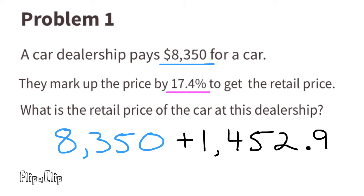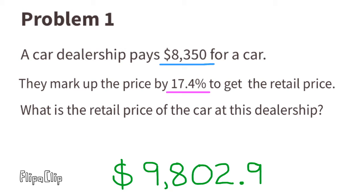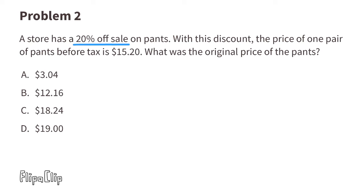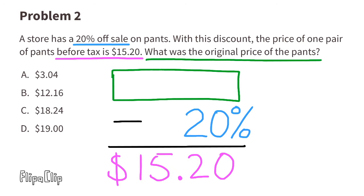$8,350 plus $1,452.90 gives us the retail price of the car, which is $9,802.90. Problem number two: a store has a 20% off sale on pants. With this discount, the price of one pair of pants before tax is $15.20. What was the original price of the pants?